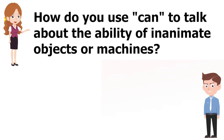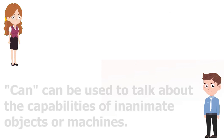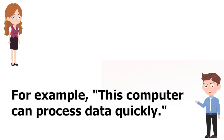How do you use "can" to talk about the ability of inanimate objects or machines? "Can" can be used to talk about the capabilities of inanimate objects or machines. For example, "This computer can process data quickly."